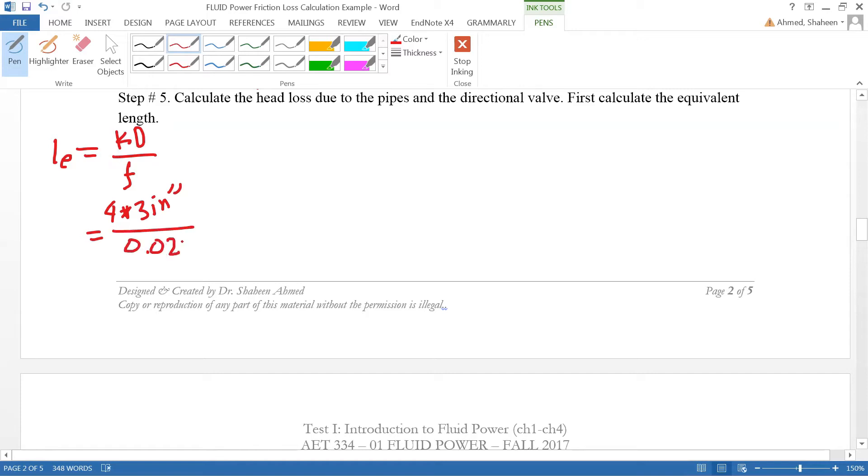To convert inches to feet, I divide by 12 inches per foot. Calculating the equivalent length, I get 45.45 feet. Now we're going to use Darcy's equation